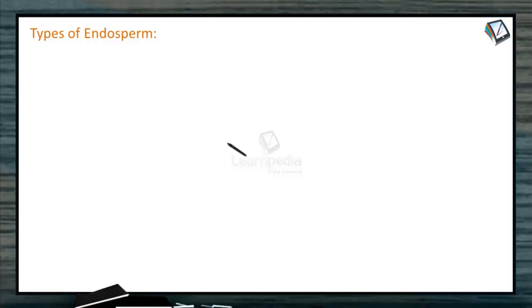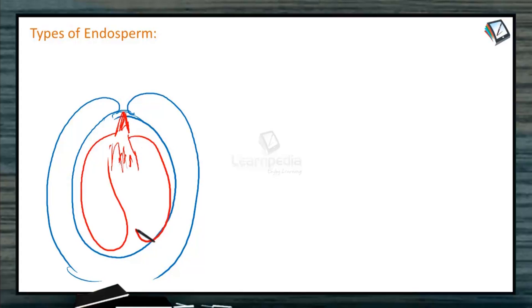Now let us see the types of endosperm. As you are already aware, inside the embryo sac, here is the embryo with radicle, plumule, and cotyledons. The nutritive tissue present inside the embryo sac is endosperm. There are many types of endosperms.